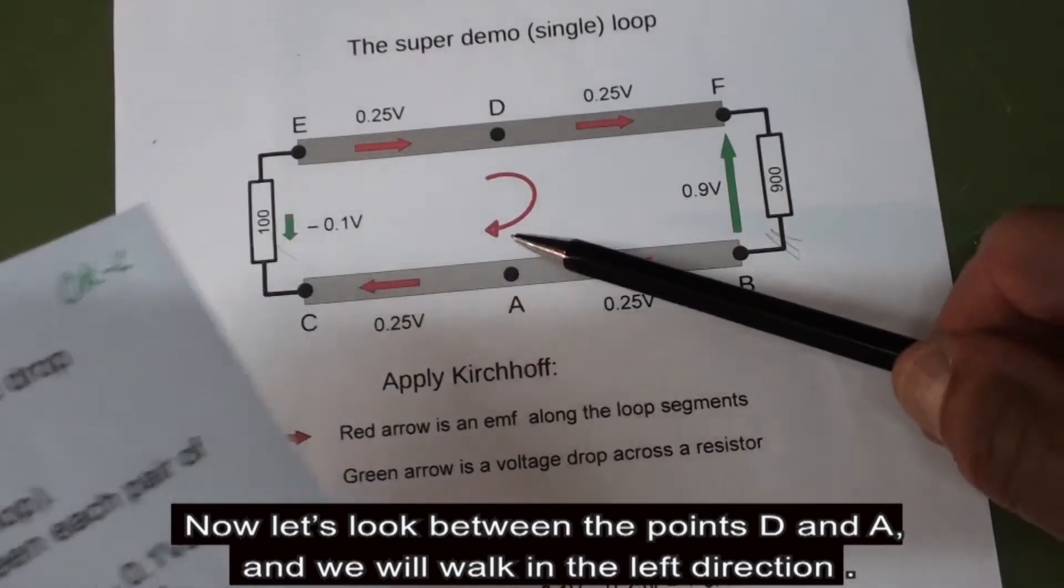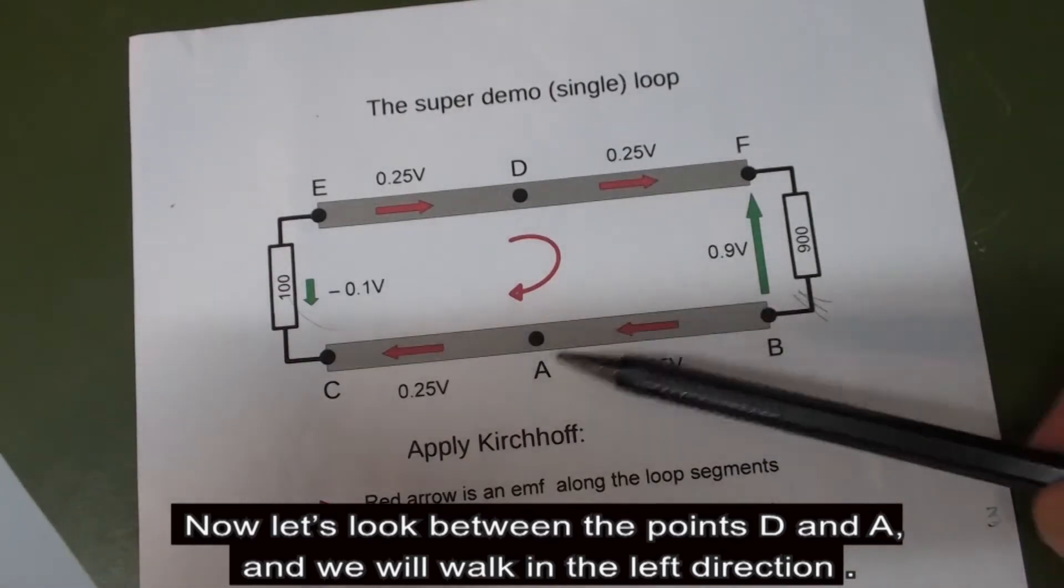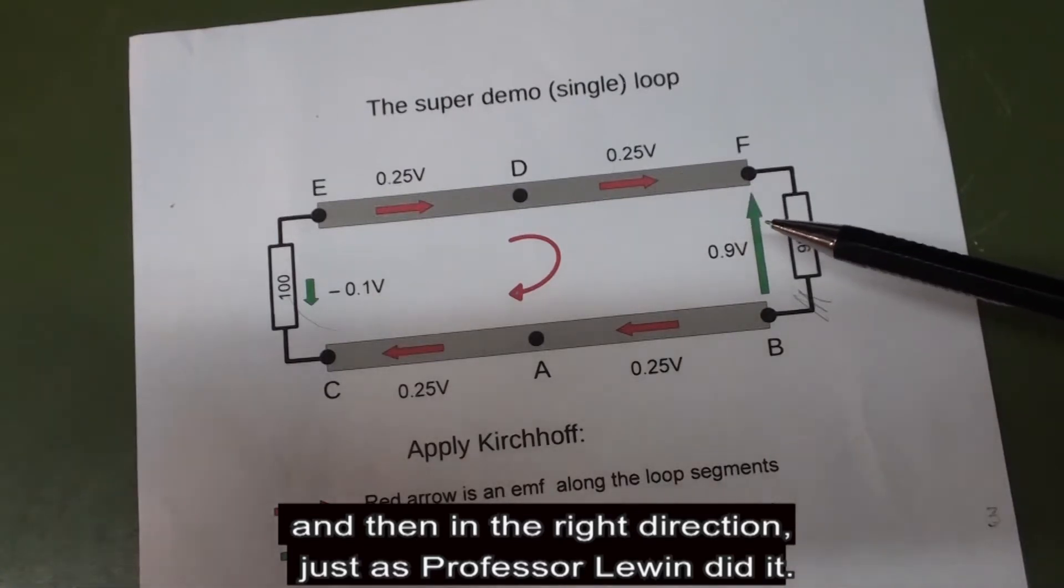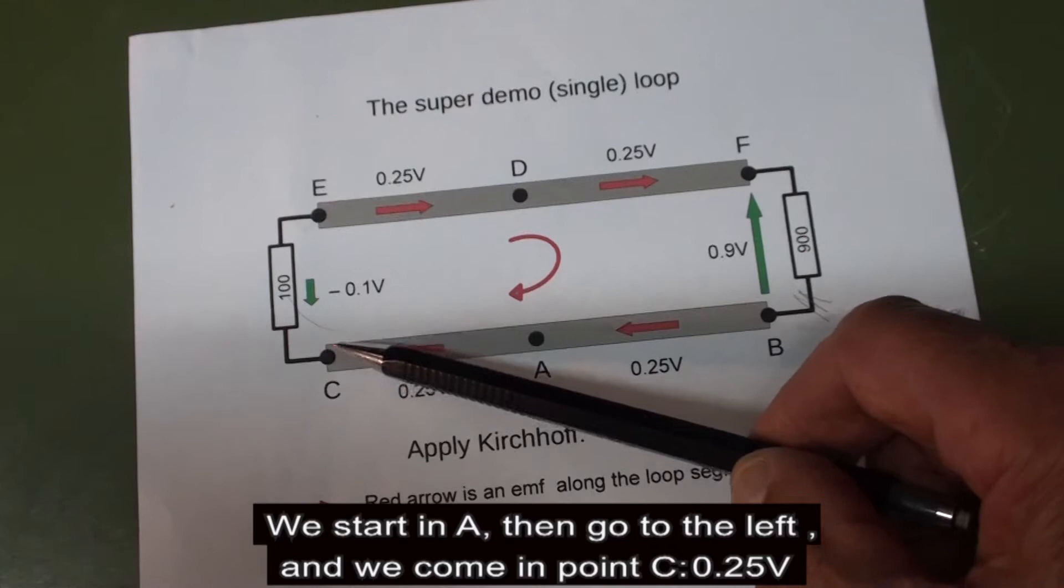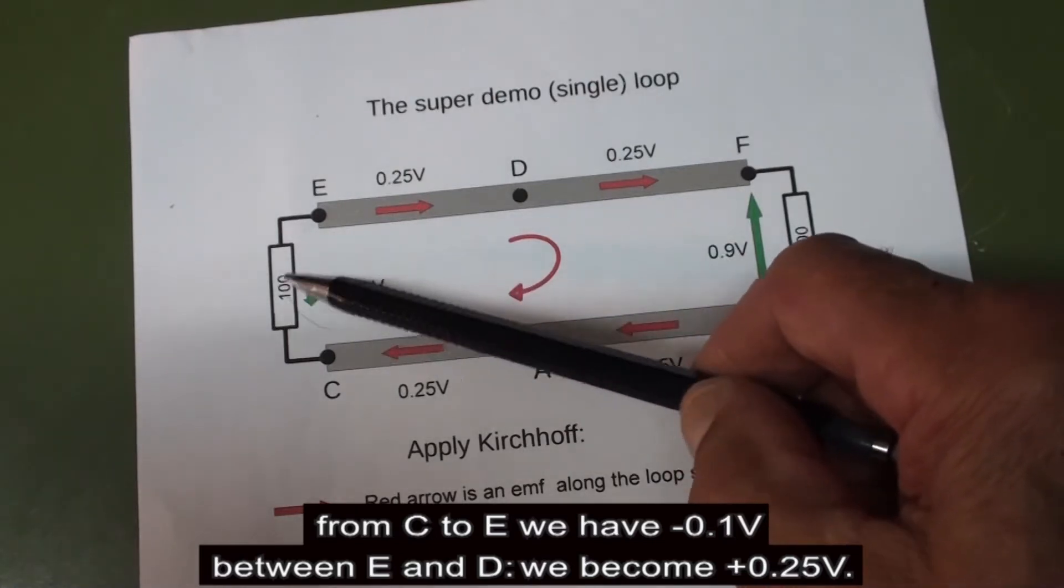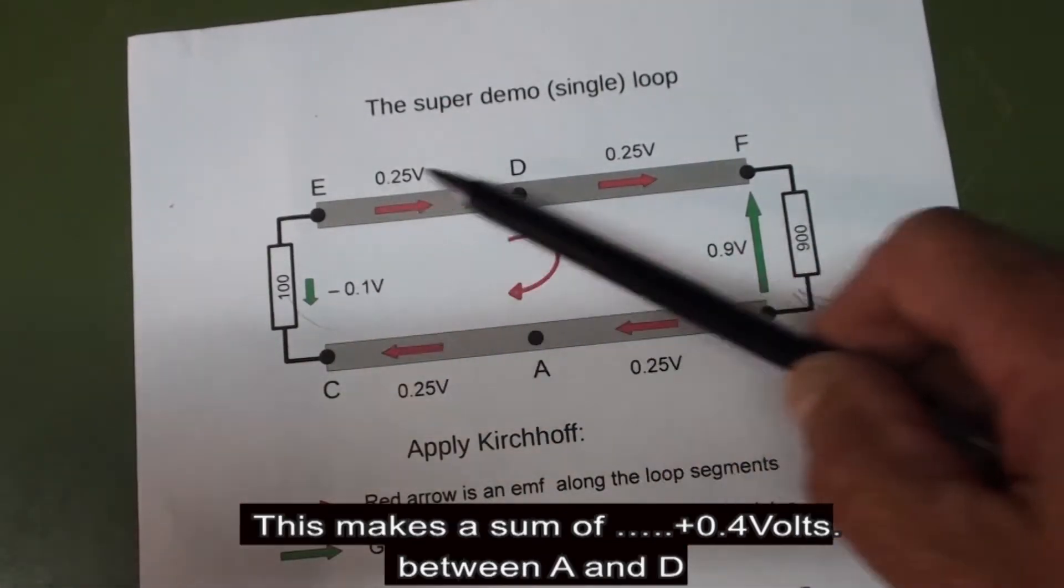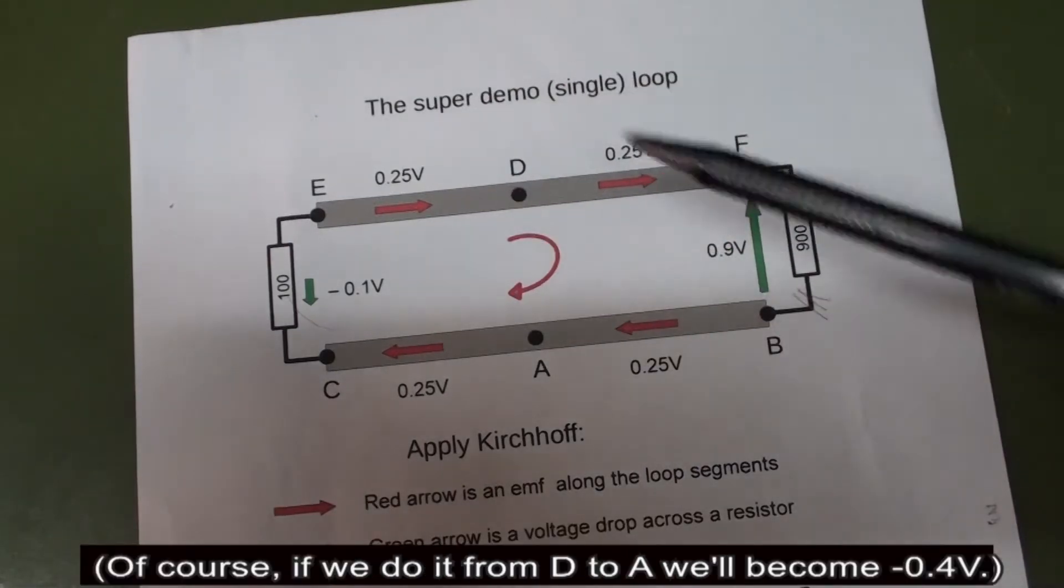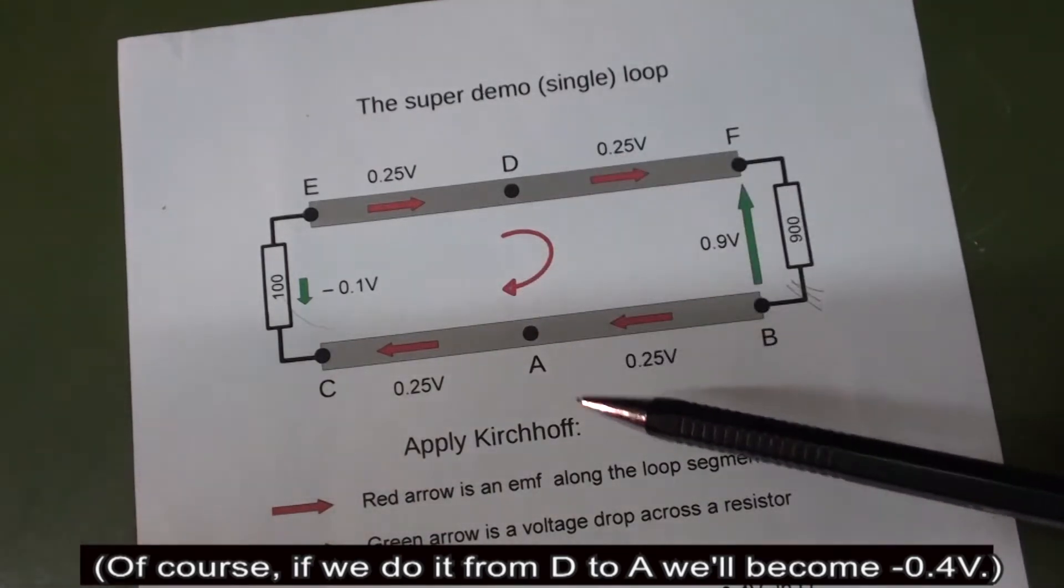Now let's look between the points D and E. We will walk in the left direction, and then in the right direction, just as Professor Lewin did it. We start in E, then go to the left and become 0.25 volts in point C. From C to E we have minus 0.1 volts. Between E and D we get plus 0.25 volts. This makes a sum of plus 0.4 volts between E and D. Of course we can do it from D to E, then we get minus 0.4 volts.